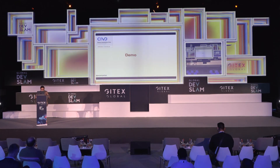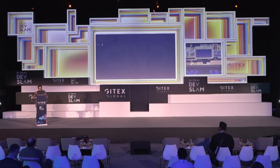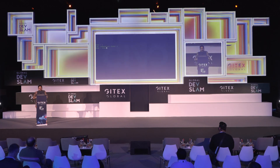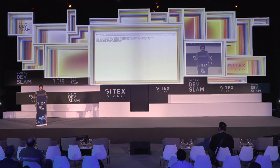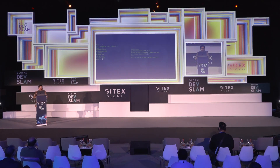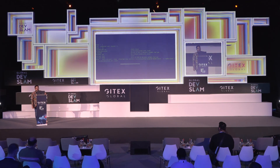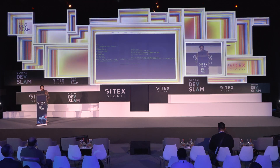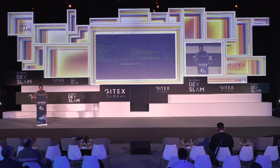Let's see a demo quickly. We'll be using SYFT to attest a particular image. What it is doing is attesting using my cosine public key. I've given an image and specified the format I want — the SPDX JSON format. The arrow means it will write to a file called global-dev-slam.att.json. It will use that particular JSON file to write the SBOM data for this particular image. It is generating right now.